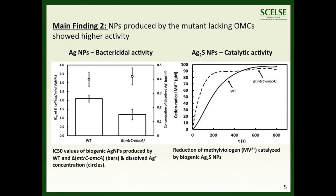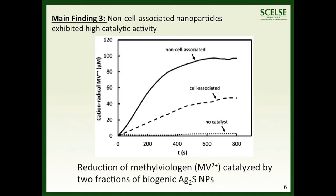Further, the biogenic silver nanoparticles showed higher antibacterial activities and the biogenic silver sulphide nanoparticles showed higher catalytic activities in Shewanella oneidensis mutants lacking Outer Membrane C-Type Cytochromes compared to wild-type strains. Interestingly, the extracellular silver sulphide nanoparticles that are not associated with the cell also exhibited high catalytic activity.